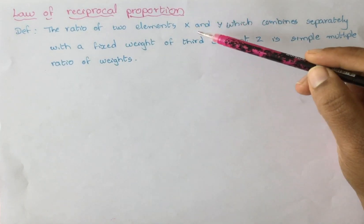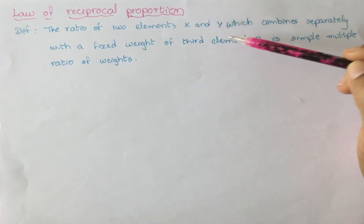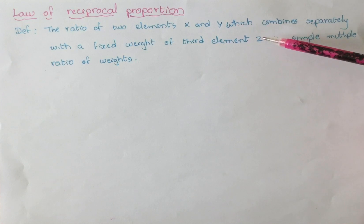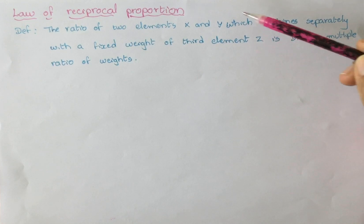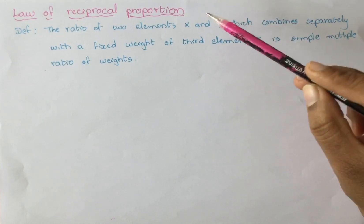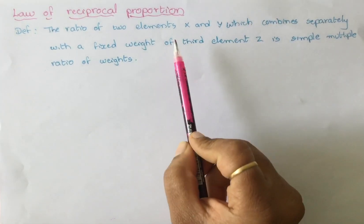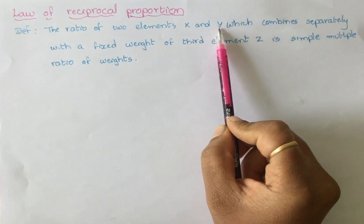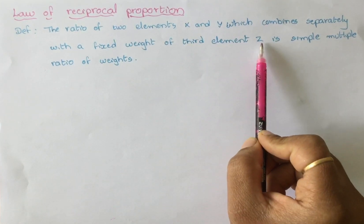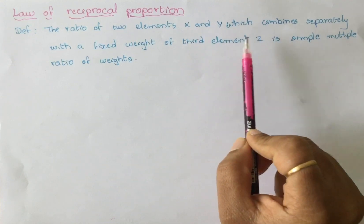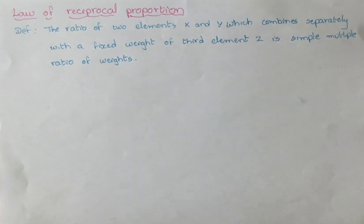What does this mean? x is combining with z, and y is also combining with z, forming two different compounds. Then the ratio of x and y — which are both combining with z — must be in a simple whole number ratio of their weights.